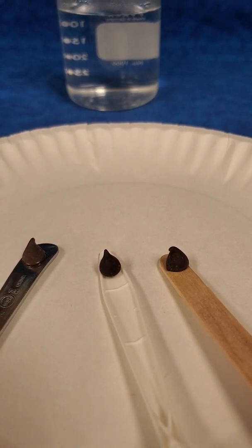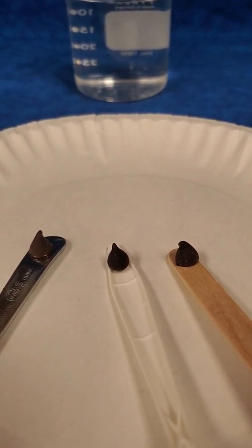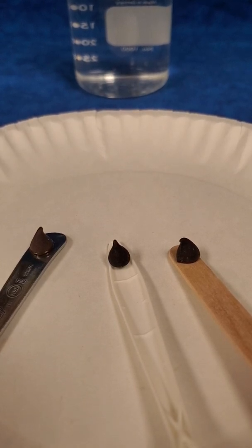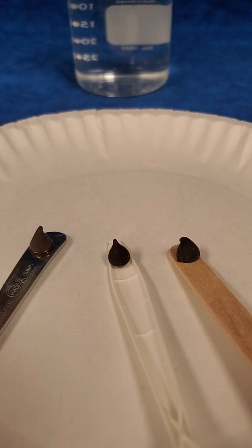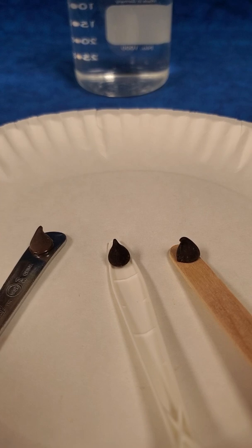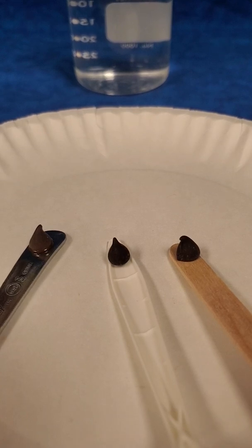Observe carefully the chocolate chips. If the heat is able to travel from the bottom of the spoon up to the handle, it will reach the chocolate chip. If the heat reaches the chocolate chip, the chocolate chip will begin to melt. You can wait about a minute to see what happens to your chip.